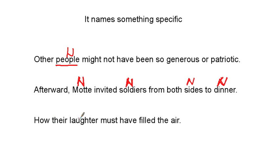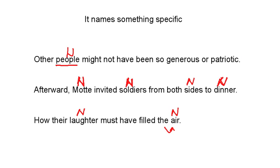'How their laughter must have filled the air.' 'Laughter' is a noun because it is a specific sound — it's naming a sound. The rest — 'must have filled' — is all one phrase with no noun in it. 'Air' is specific — a specific gas, a specific setting — it is something specific. Obviously it's much easier to note that 'the' is modifying 'air,' but for purposes of this strategy, those are the nouns we identify.